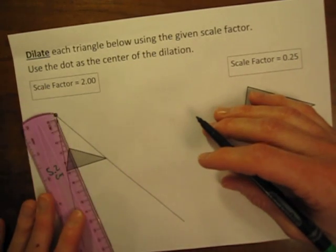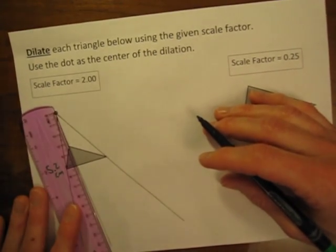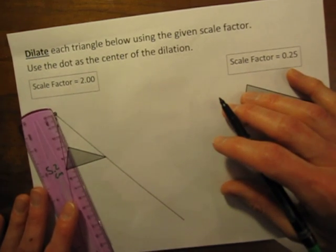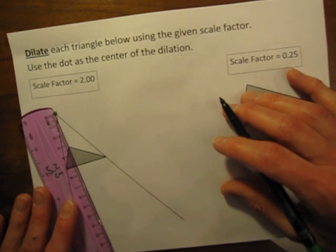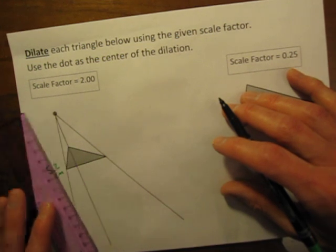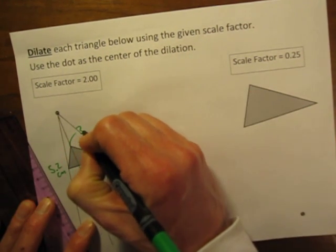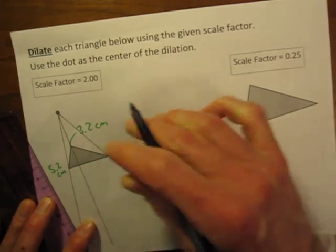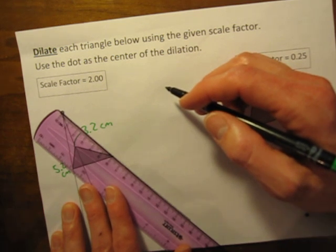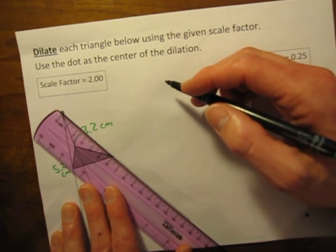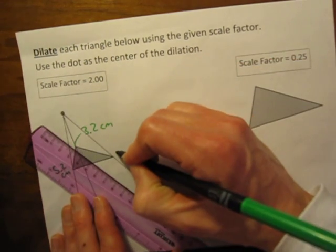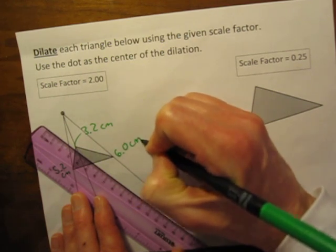This point up here is, I'll stand up to get a better view here to make sure this is accurate. I would say that appears to be, I'll call that 3.2 cm. And this last point down here, this one is a distance from that center of dilation. The distance appears to be, let's just call it 6.0 cm.